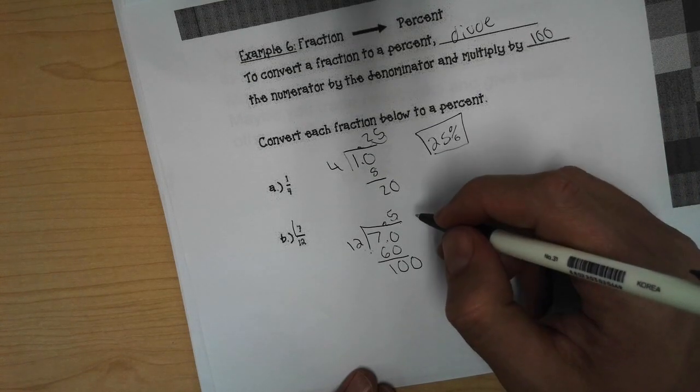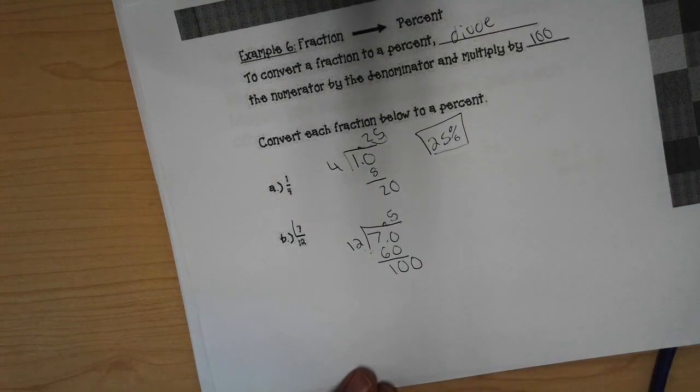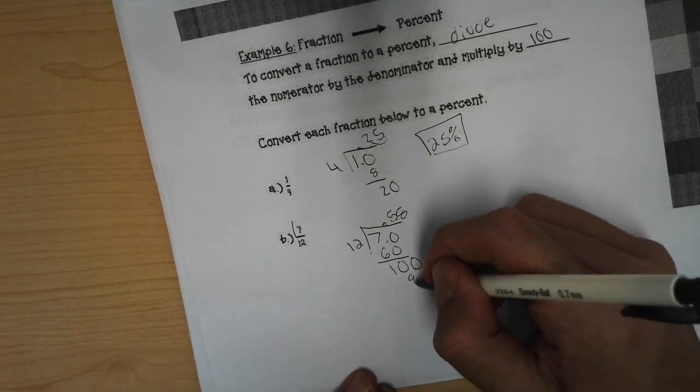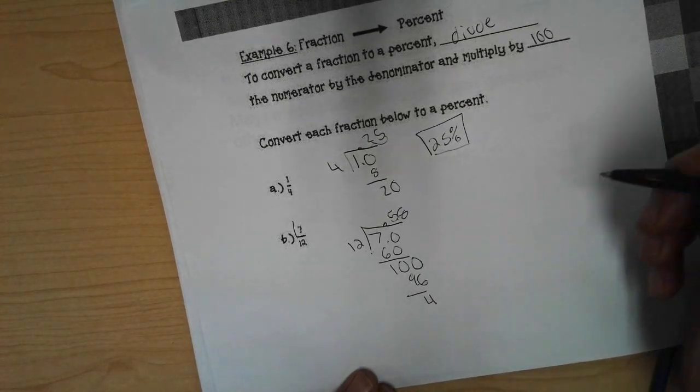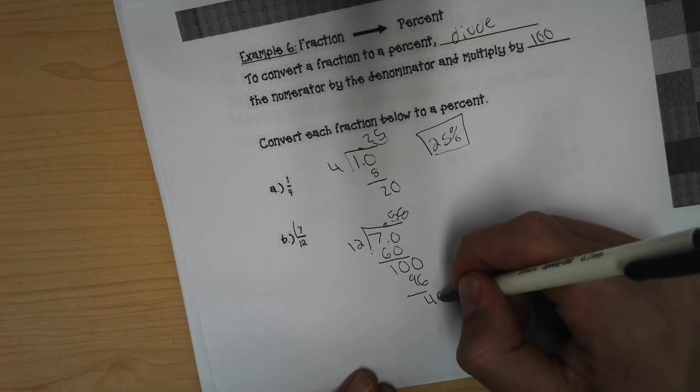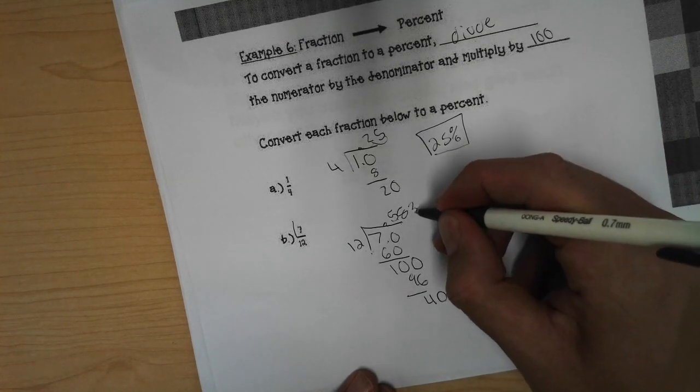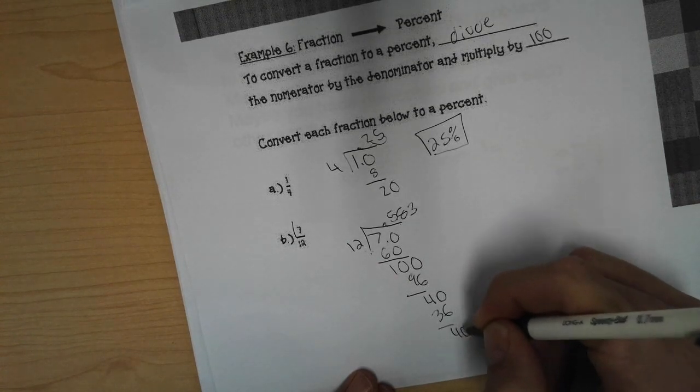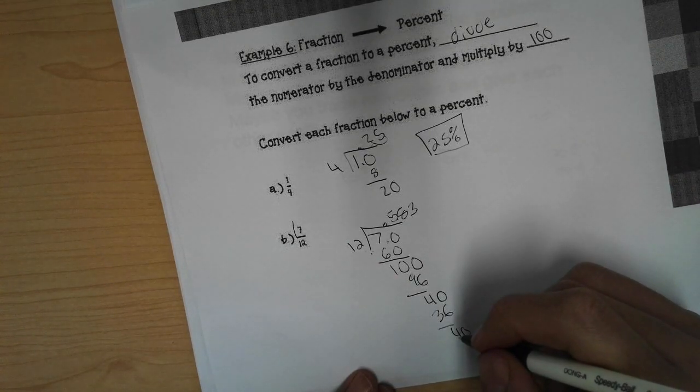Now we'll add a zero. Twelve times eight is 96. With a remainder of four. Add a zero. Goes in there three times. Then it looks like we're going to continue to repeat here.